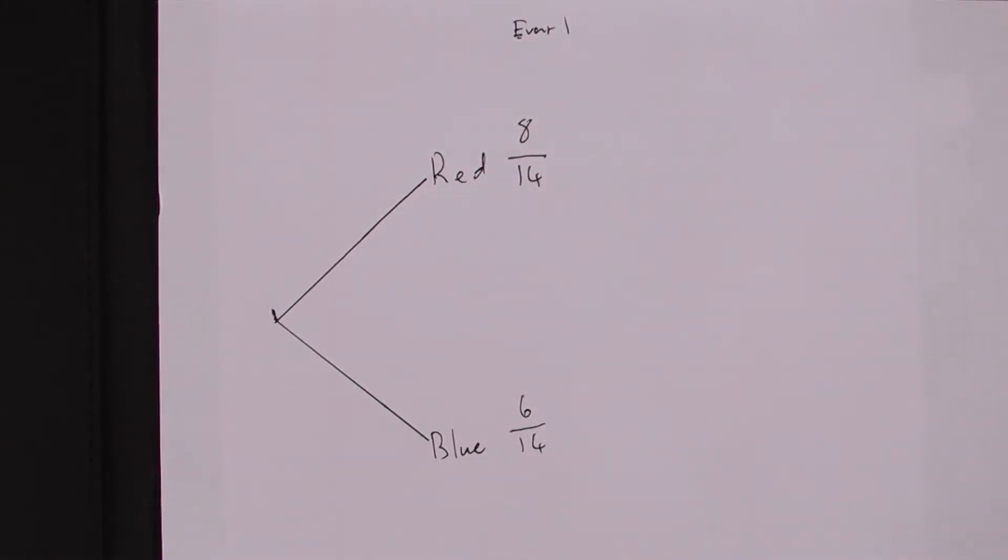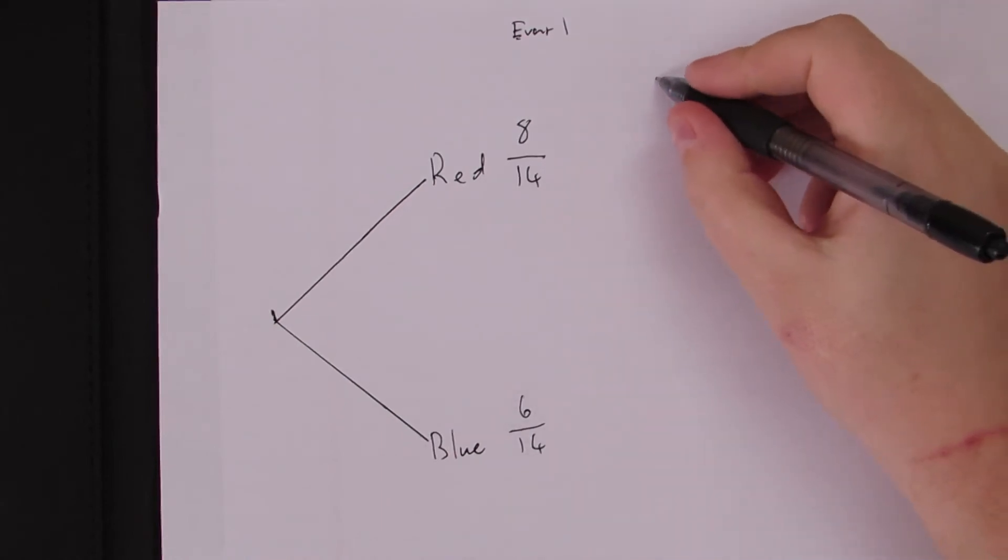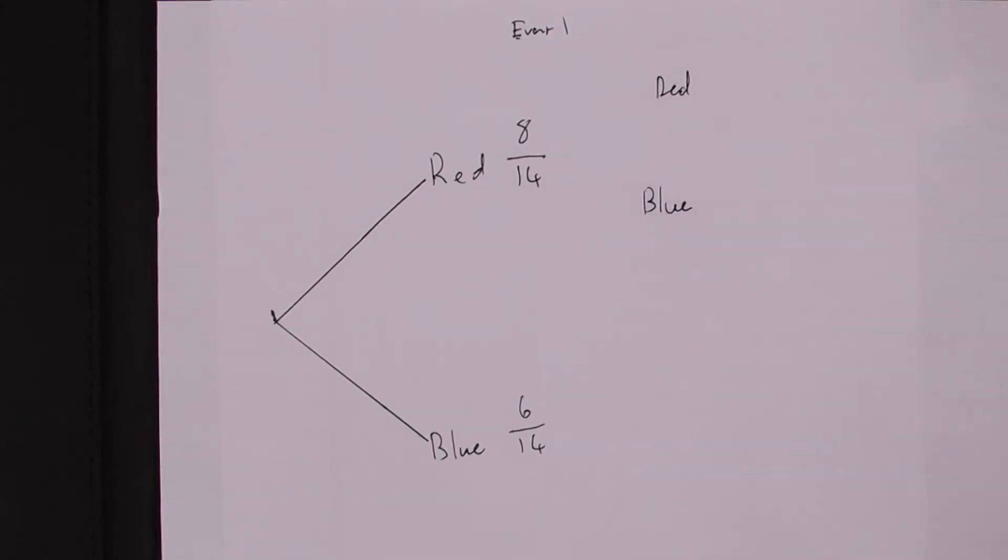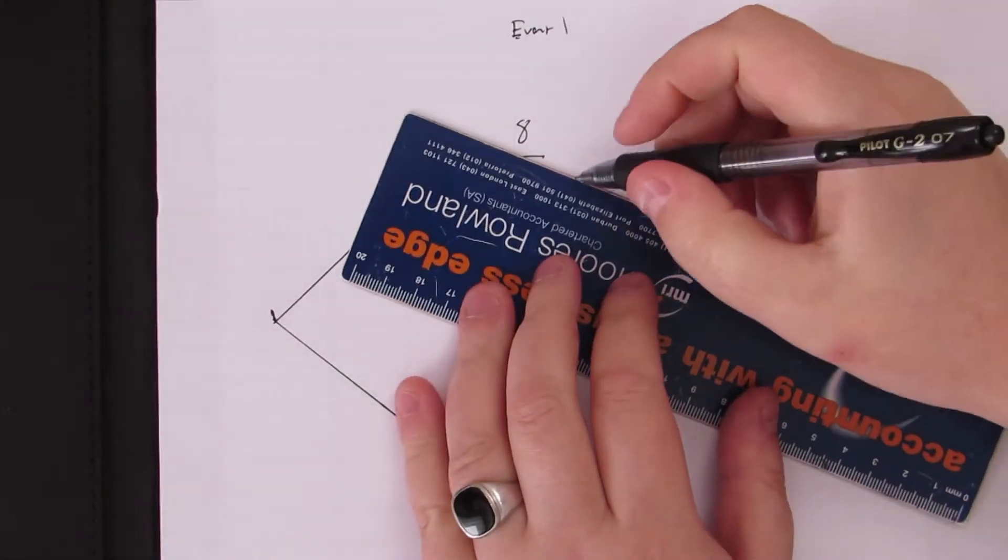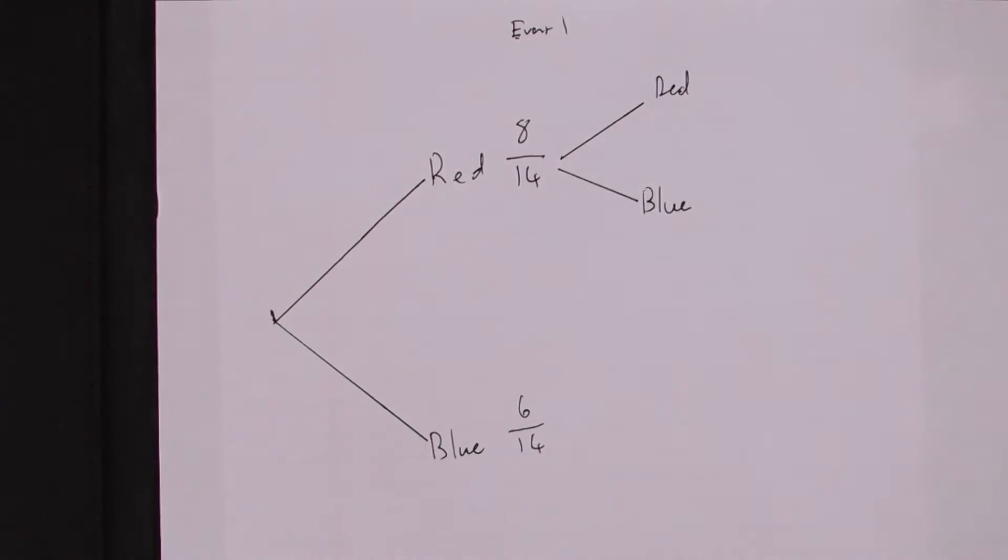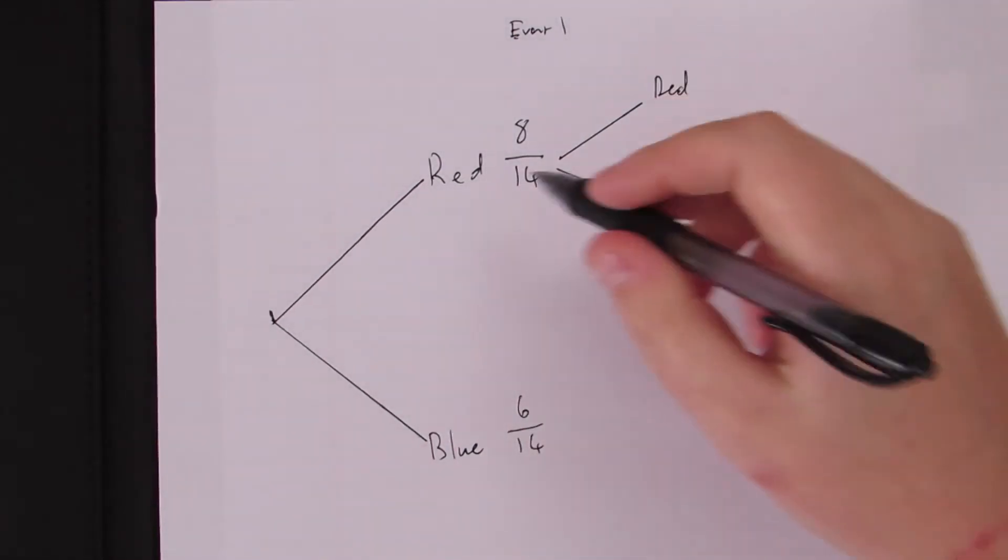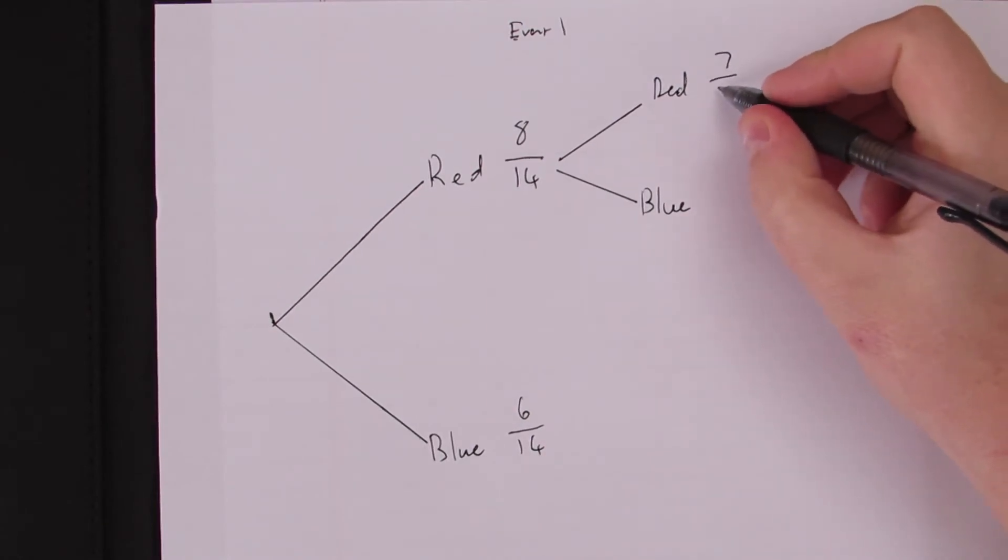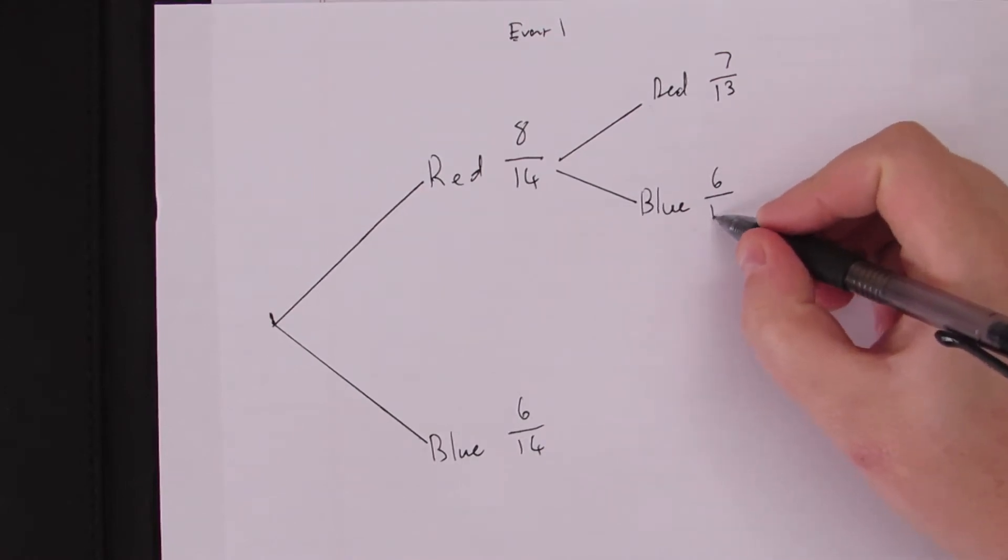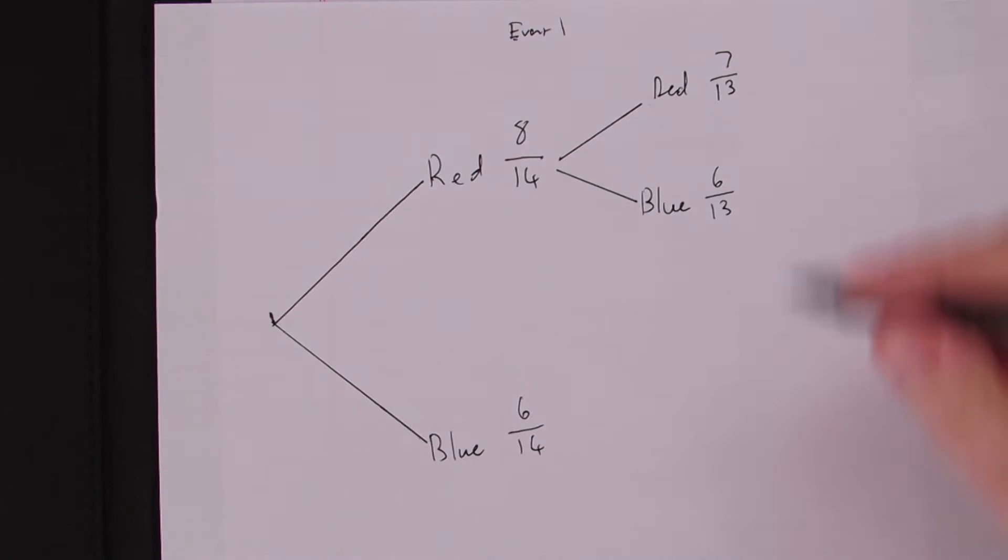Next, we're going to pull out another sock at random. If I had already pulled out a red sock, I can still pull out a red sock or a blue sock, right? So, still looking at my red, still looking at my blue socks. This time around, we need to take note of the fact that we are not replacing the socks. So, out of all of the socks that I have, I had eight red socks, now I only have seven, and there are thirteen socks in total left. I still have all six of my blue socks remaining. So if I add my seven and my six together, I get thirteen.